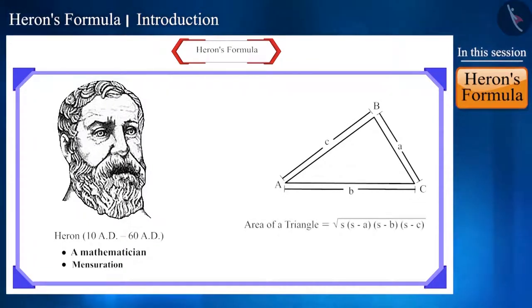Square root of s in brackets s minus a, s minus b, s minus c, which we use to find the area of a triangle. This is called Heron's formula.